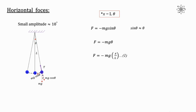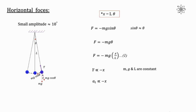Substituting theta equals x upon l from the earlier equation, we get F equals minus mg x divided by l — this is equation number one. We can see that the internal restoring force is proportional to displacement, since mass, acceleration due to gravity, and the length of the pendulum are all constants; the only variable is displacement. The force acts in the opposite direction of displacement. Since the force acts along the tangent to the vertical circle, it is called the tangential force, and the corresponding acceleration is called the tangential acceleration.